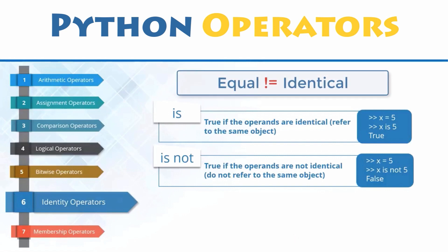Hence, two variables that are equal does not necessarily imply that they are identical, with the same identity.